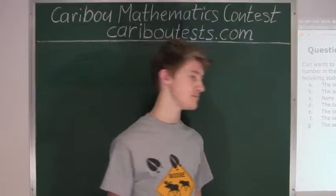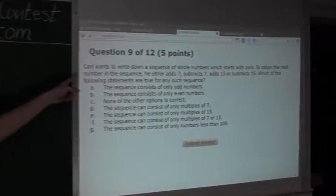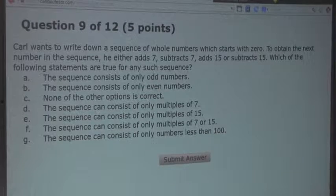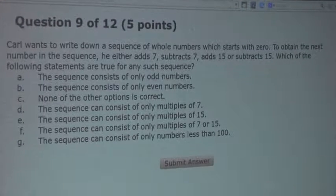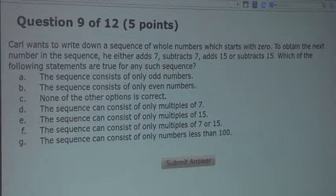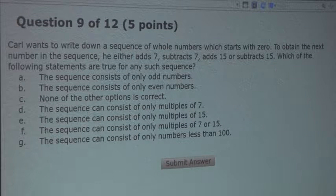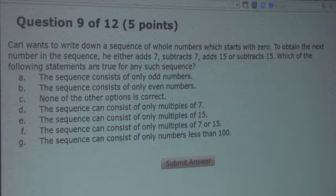So the question is: Carl wants to write down a sequence of whole numbers which starts with 0. To obtain the next number in the sequence, he either adds 7, subtracts 7, adds 15, or subtracts 15. Which of the following statements are true for any such sequence?